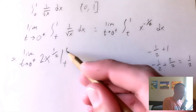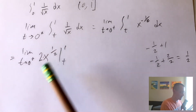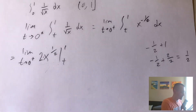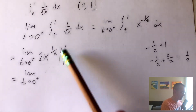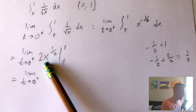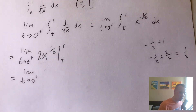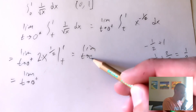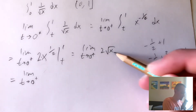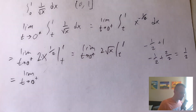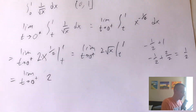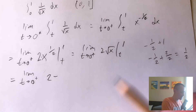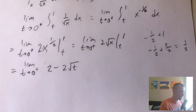To evaluate over these bounds we plug in our upper bound, plug in our lower bound, and take the difference. We still have our limit as T goes to 0 from the right. Plugging in 1 gives us 2 times 1 to the 1/2 — taking something to the 1/2 power is the same as taking the square root — so the square root of 1 times 2 is 2. Plugging in T gives us 2 times the square root of T.